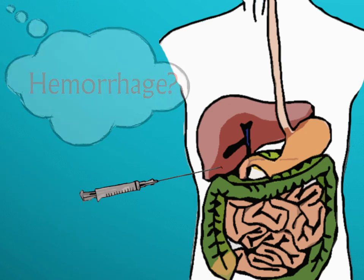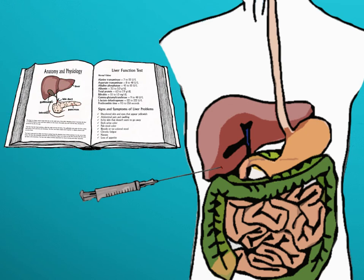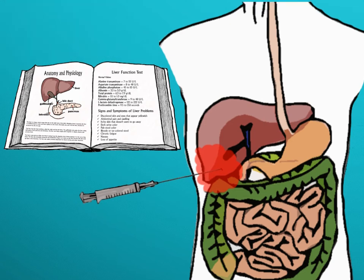To answer this level of question, you were just asked to recall what you learned about the liver — a highly vascular organ that, when punctured like in the biopsy, internal hemorrhage can result.